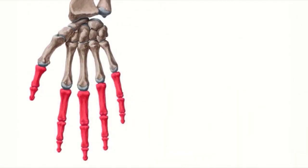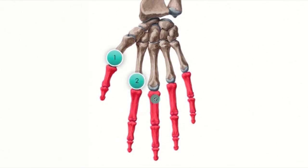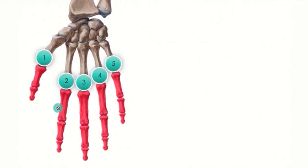In a clinical or educational setting when reporting fractures or discussing a specific phalanx, you number them according to the position of the finger. The phalanges on the thumb are the first, the index finger the second, the middle finger the third, the ring finger the fourth, and the little finger the fifth. So, for example, the proximal phalanx of the index finger would be called the second proximal phalanx.